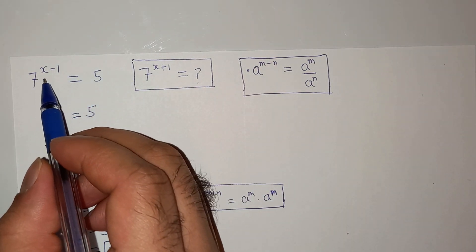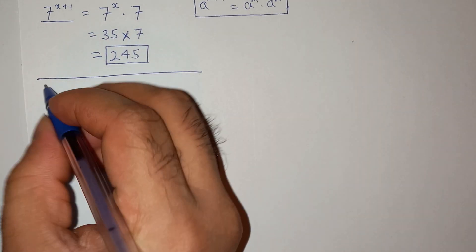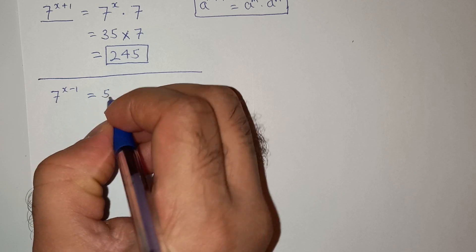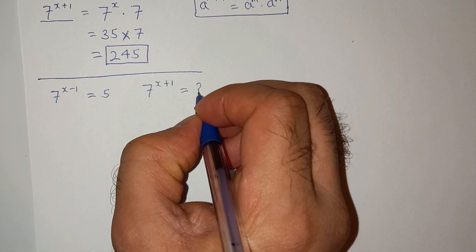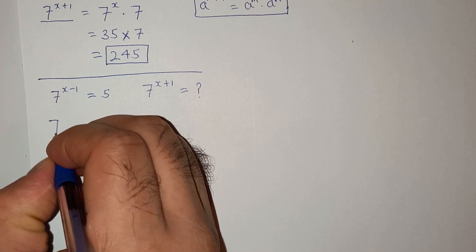So we are given that, let me write it here, we are given that 7 power x minus 1 equals to 5. We have to find the value of 7 power x plus 1.